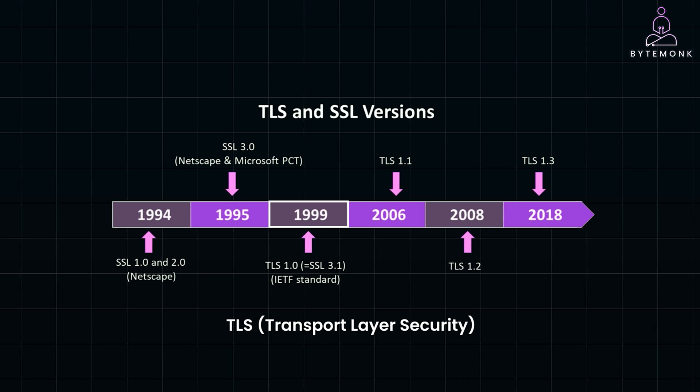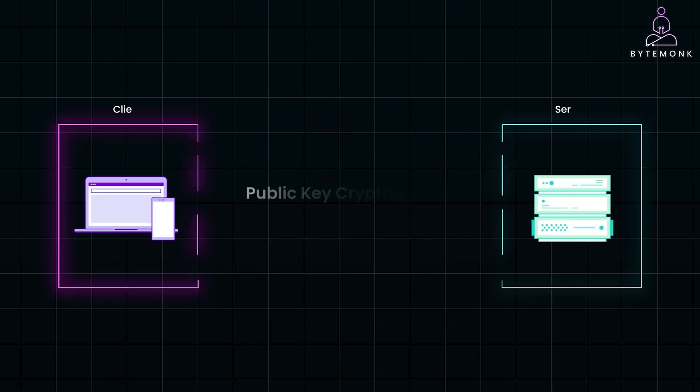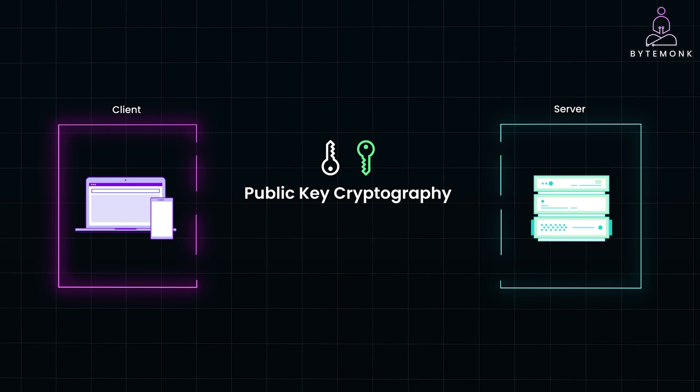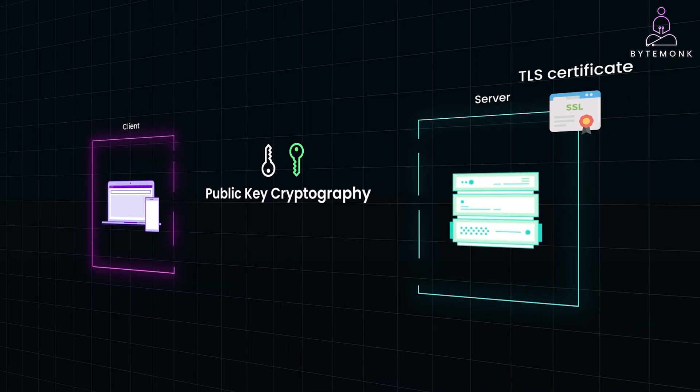With enhanced security mechanisms, TLS secured millions of online interactions. TLS operates using public key cryptography with a public-private key pair. The server typically has a TLS certificate with these keys, but the client does not.